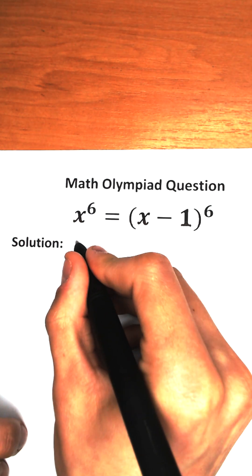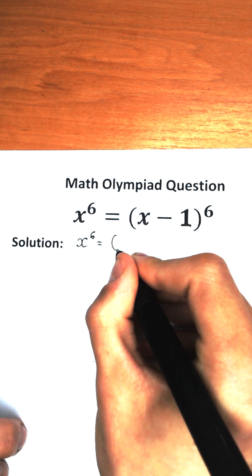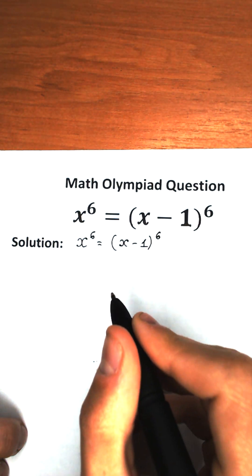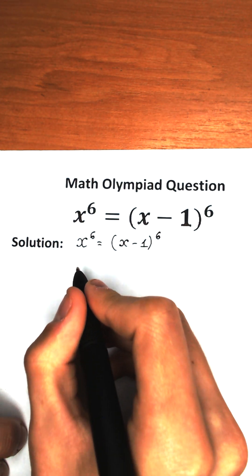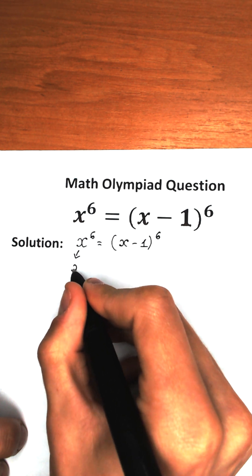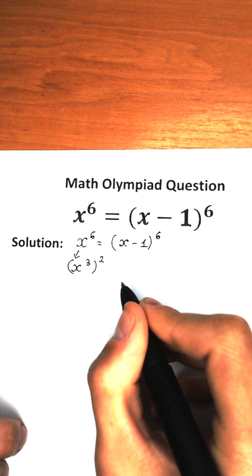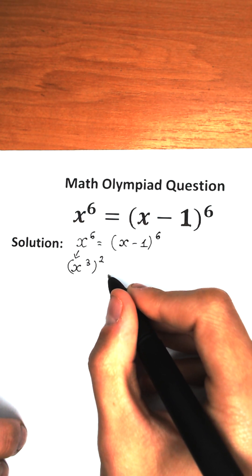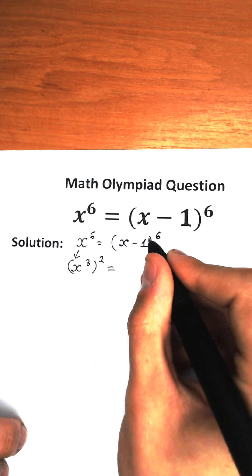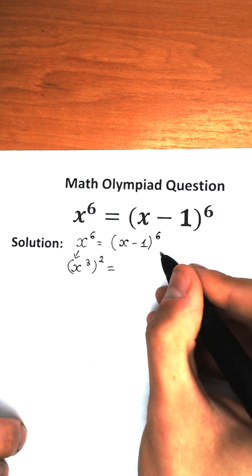Let's rewrite this challenge. We have x to the sixth power equal to x minus one to the sixth power. I suggest a really great approach: let's write x to the sixth power as x cubed, all squared, on the left-hand side. And on the right-hand side, let's write x minus one to the sixth power as x minus one cubed, all squared.